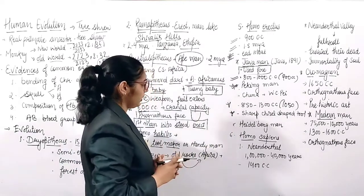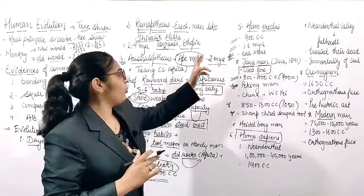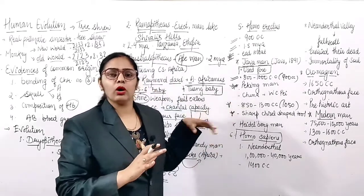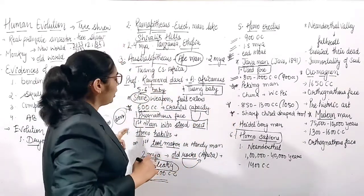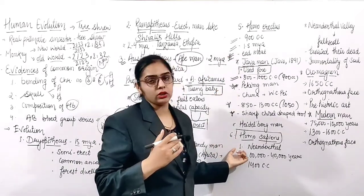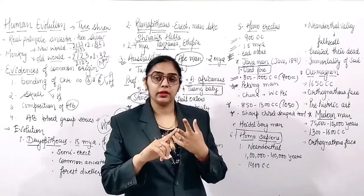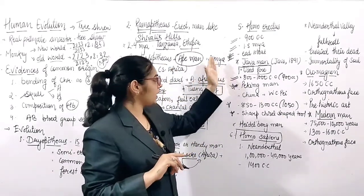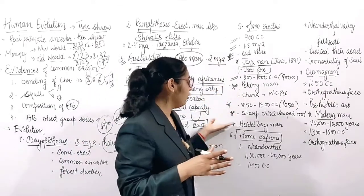Homo habilis and Homo erectus are called prehistoric man. The full mnemonic is: Doctor Ram and Hanuman JA PA N - Doctor = Dryopithecus, Ram = Ramapithecus, A = Australopithecus, Hanuman = H for Homo habilis and Homo erectus, JA = Java Man, PA = Peking Man, N = Neanderthal Man.